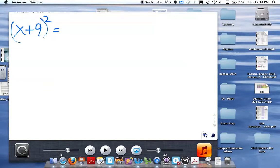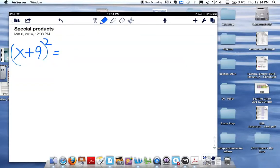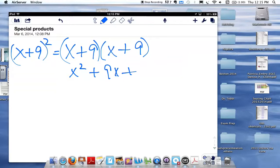In the first problem, it says x plus 9 quantity squared. You might be tempted to call that x squared plus 81, but that couldn't be further from the truth. Remember that means x plus 9 times x plus 9, which is going to be x squared plus outer 9x plus inner 9x plus last 81, which simplifies to x squared plus 18x plus 81.